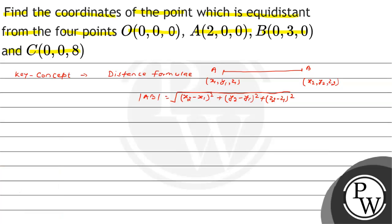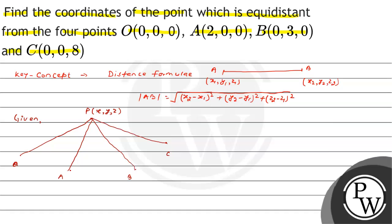We will look at the problem. Let the given point be P(x, y, z). Its distance is equal from the four given points. That is, the distance from O to P equals the distance from A to P, equals the distance from B to P, and equals the distance from C to P.